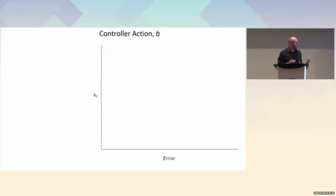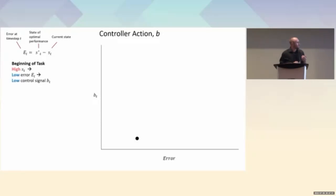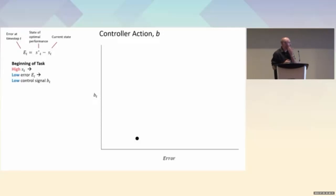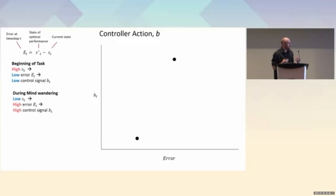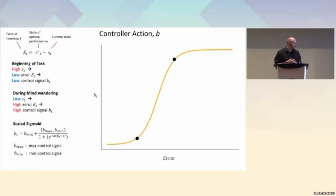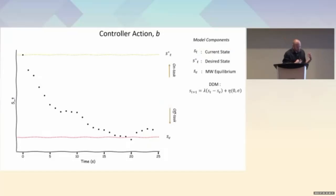To remain on task and not mind wander, the system exerts a control signal, where the amount applied at a given time step is a function of error. If task performance is acceptable — for example, a high S(t) at the beginning — a low error signal is generated and low control is applied. However, during mind wandering there is a large error since attention is not where it's supposed to be, producing a high error and larger control signals. This relationship takes the form of a scaled sigmoid with a maximum and minimum control signal the controller can exert at any given time step.